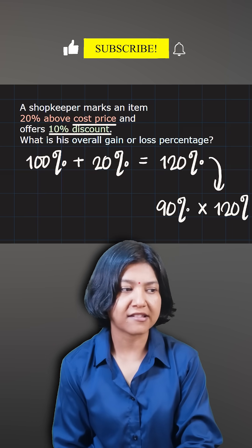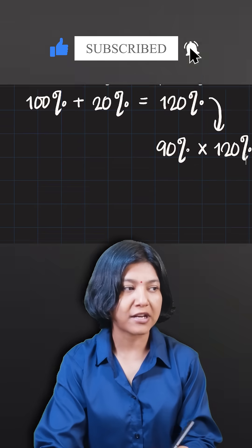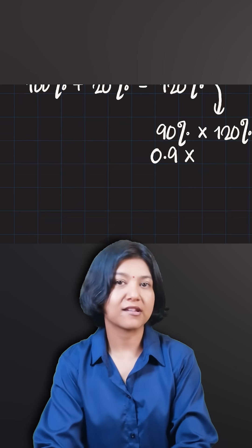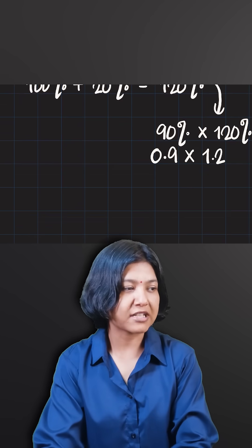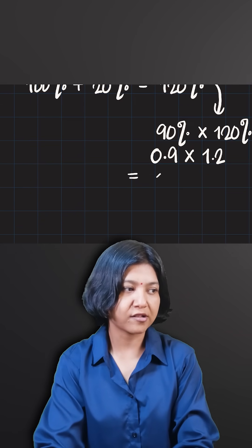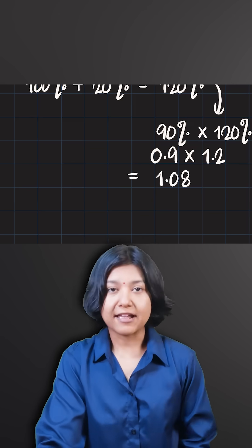And you can write them as a decimal. 90% is just 0.9 and 120% is just 1.2. If you multiply these two numbers, you get the answer 1.08.